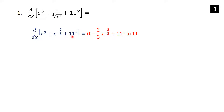For the third term, 11 to the x, the rule is that the derivative of some number to the x is that same thing times the natural log of that number. So the derivative of 11 to the x is 11 to the x times ln of 11. If you're confused, we'll also show how to do this using logarithmic differentiation shortly.